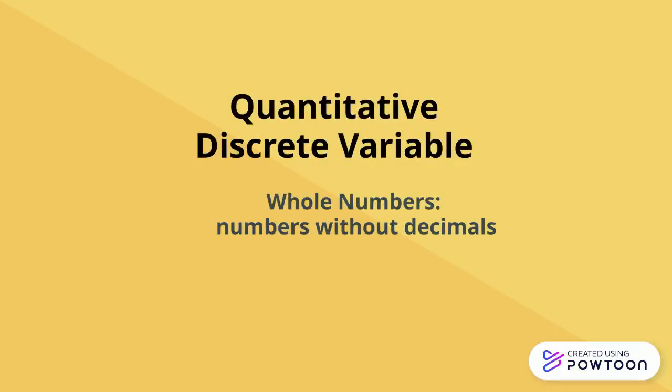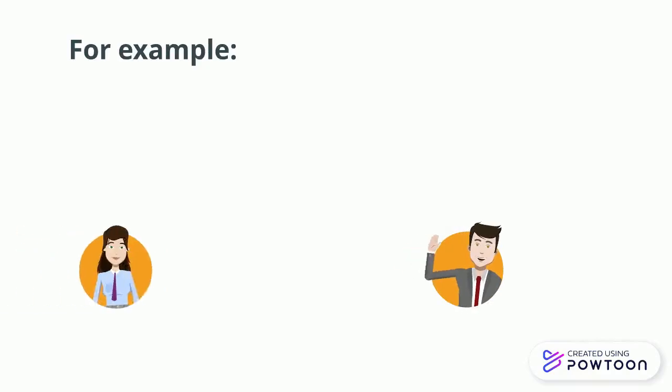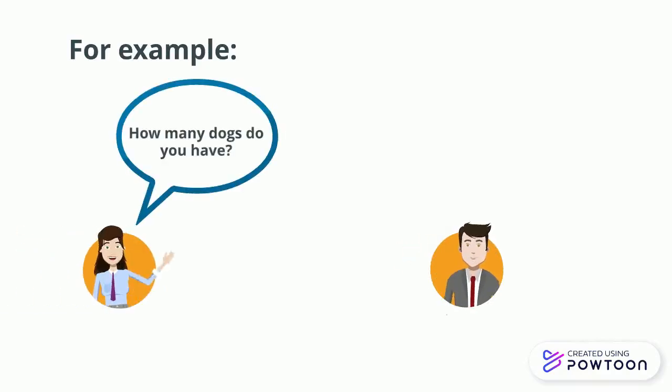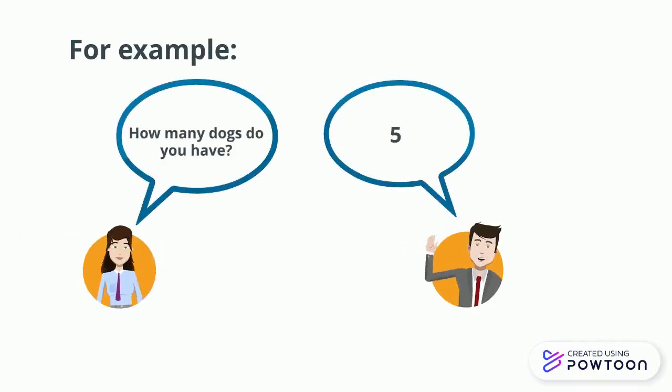Quantitative discrete variables are whole numbers — numbers without decimals. For example, how many dogs do you have? You can't have four and a half dogs.